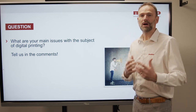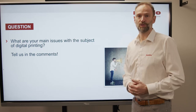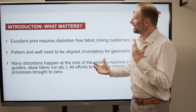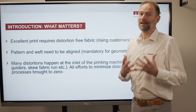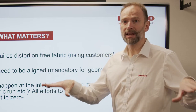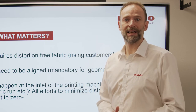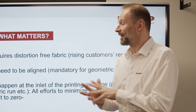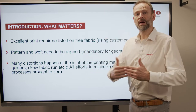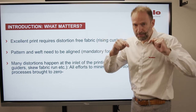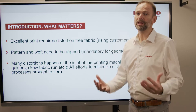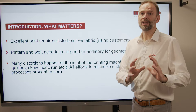So before we start, what are your main issues with digital printing? What bothers you? What gives you headaches? If you leave us some comments down here, it would be highly appreciated. So what matters? Every excellent print requires an excellent preparation. That means if you don't have a good preparation, if you don't have a straight fabric, your print will also be distorted and damaged. So the pattern and the weft need to be aligned before printing. If you print straight on a skewed fabric, you will have a skewed print once the fabric is straightened. Our suggestion: do it at the standard before the printing in a good way, and then you have already made a very good start to secure a proper printing.